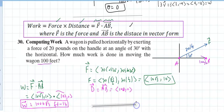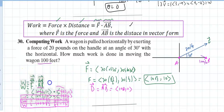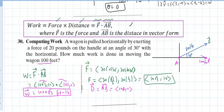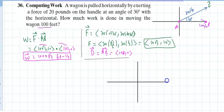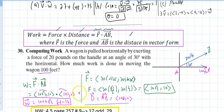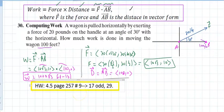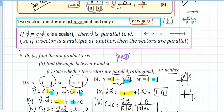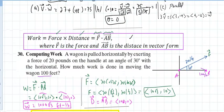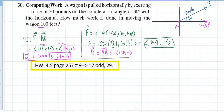The two main uses of the dot product are: first, to determine if two vectors are orthogonal — which is important in many applications — and second, to find work. The homework is on page 257. Let me see if there's time to derive the work formula as well.